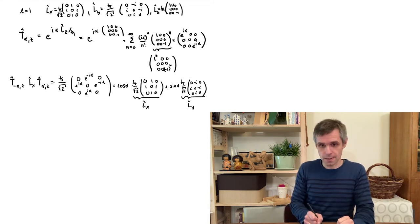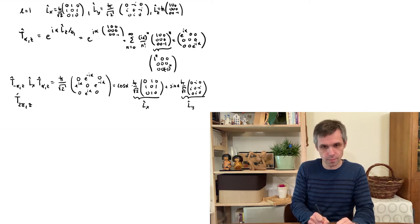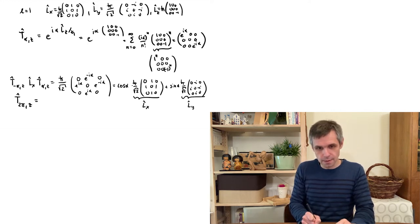All of this makes a lot of sense. For instance, if we rotate by 2π, the rotation operator simply becomes the identity operator, which is exactly what we expect.